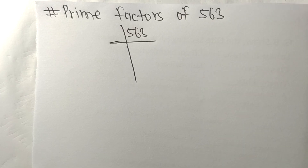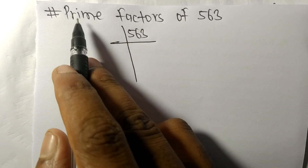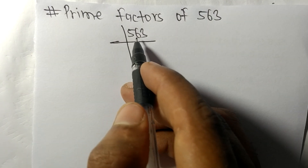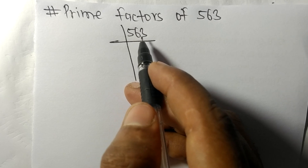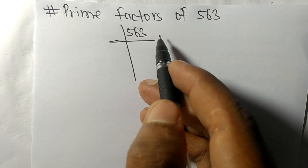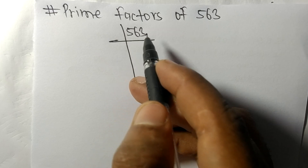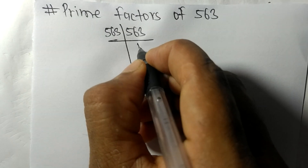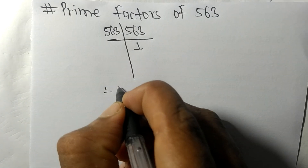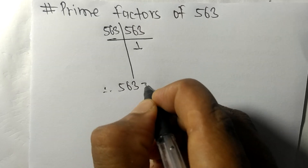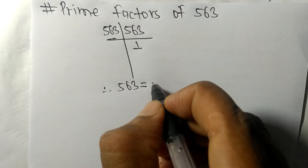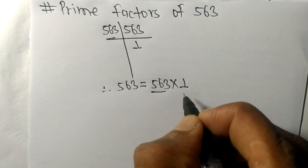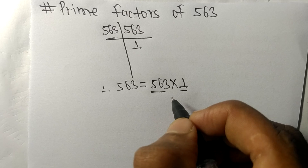Today we shall learn to find the prime factors of 5163. 5163 is a prime number, so it is not divisible by any other numbers. 5163 is divisible by 5163 itself and we get 1. Therefore, 5163 equals 5163 times 1, so 5163 and 1 are the prime factors of 5163.